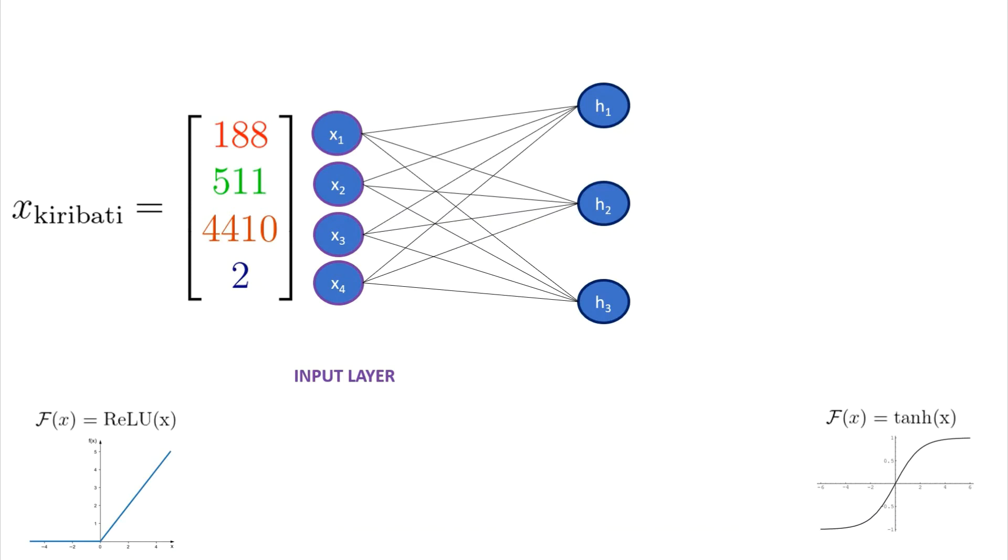Also note, we call H the hidden layer. We can now go on to compute Y, which, if you recall, is to represent the life expectancy. Using the same structure and weights defined by a matrix B, the output Y is an activation function, F2 of BH. We can then go on to write the overall function as shown.